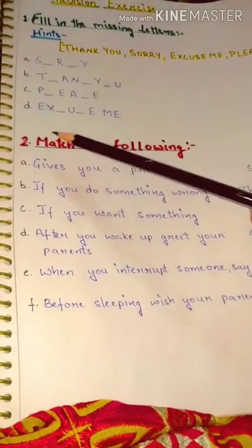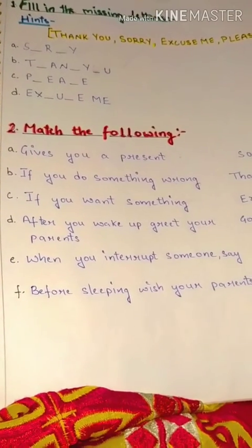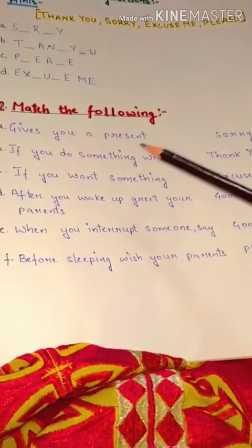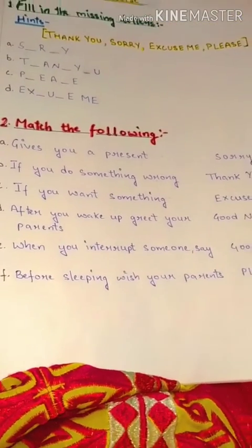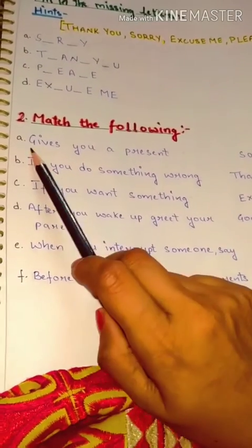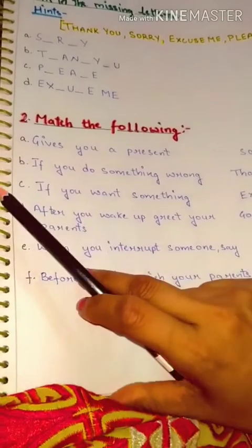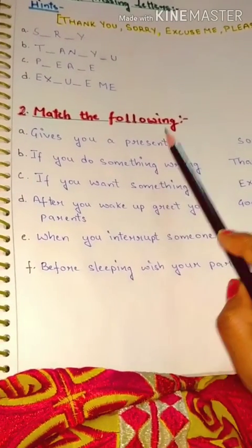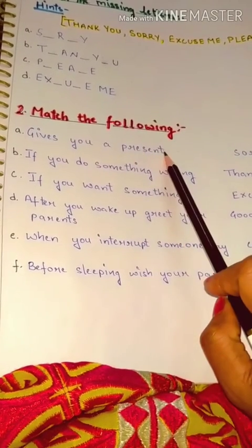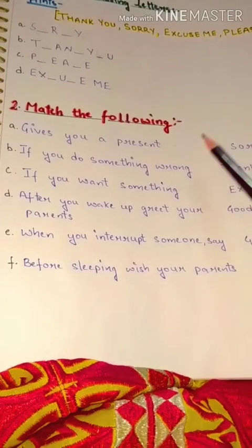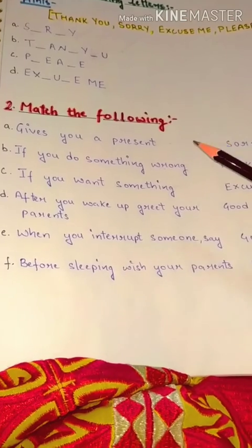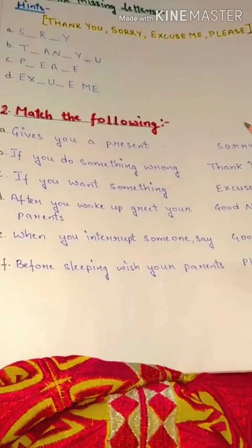Now come to question number two: match the following. This match the following is related to the golden words — the polite words that you should use in daily life. Number A: if someone gives you a present — present means any gift — for example if your father gives you a gift on your birthday, then children, what will you say?